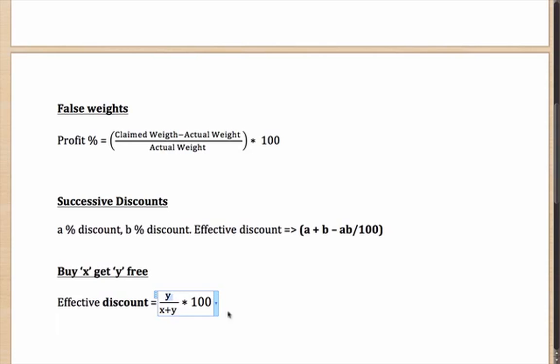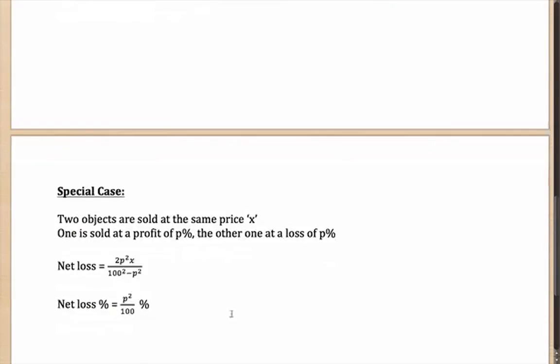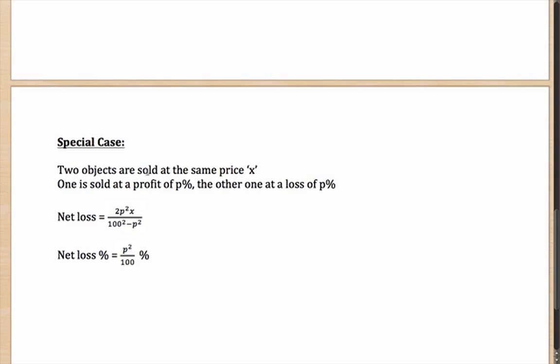Moving on to a special case: let's say when two objects are sold at the same price of x, one is sold at a profit of p% and the other one is sold at a loss of p%. Then what will happen? Are you overall in profit or overall in loss? Well, as you can see from the formula here, you are going to be in an overall loss, and the amount of the loss is given by (2p²x)/(100² - p²).